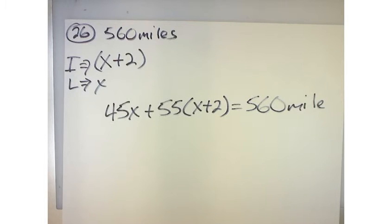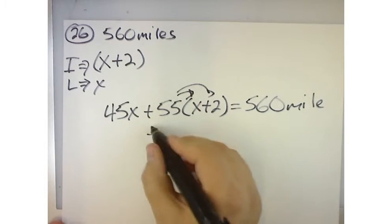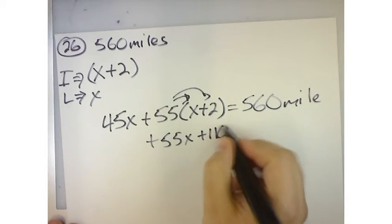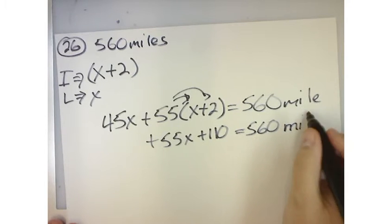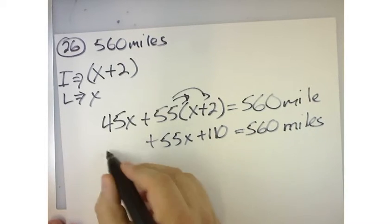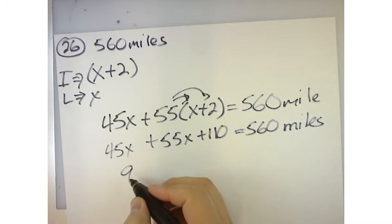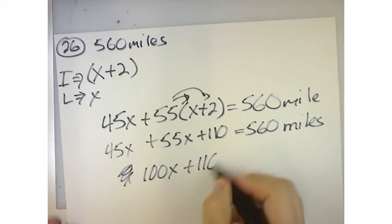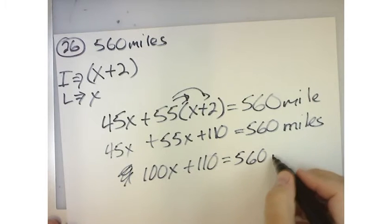Well, 45X. So we push this 55 through and I get 55X plus 110 is equal to 560 miles. Right? So I get, what's 45 plus 55? Isn't that a hundred?